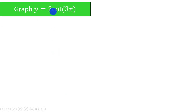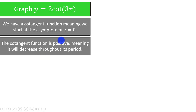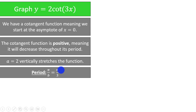We are asked to graph y is equal to 2 times the cotangent of 3x. We have a cotangent function, meaning that we start our period right at x equals 0 with an asymptote. This cotangent function is positive, meaning it will decrease throughout its period. We have a value out front multiplying the function, which is 2 — that's going to vertically stretch the function. Any point that we previously had a 1 will now become a 2. We can find the period by taking pi and dividing by b, which gives pi over 3.